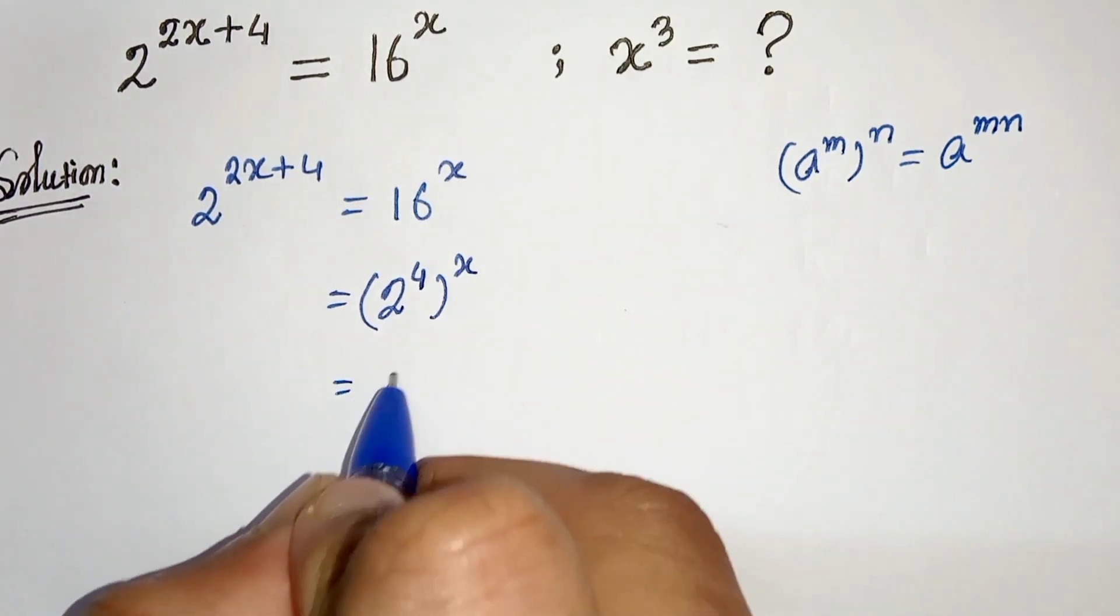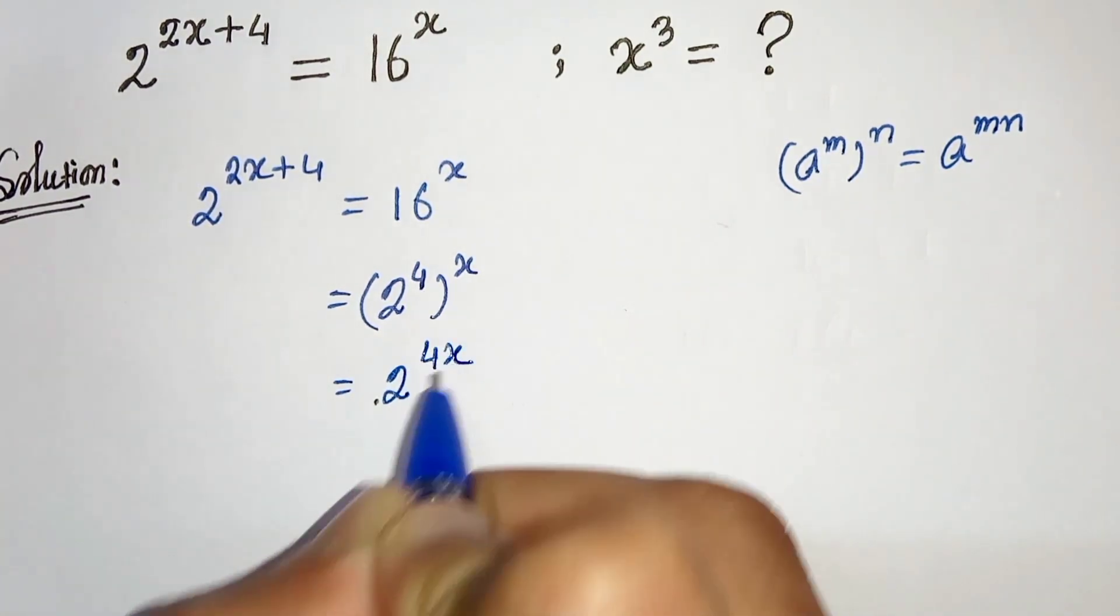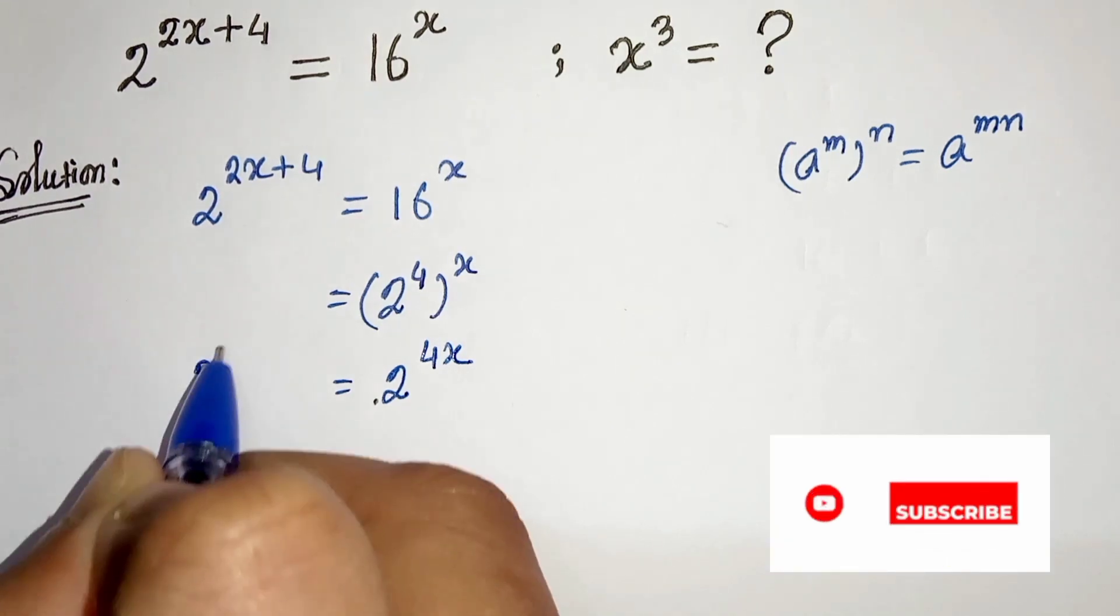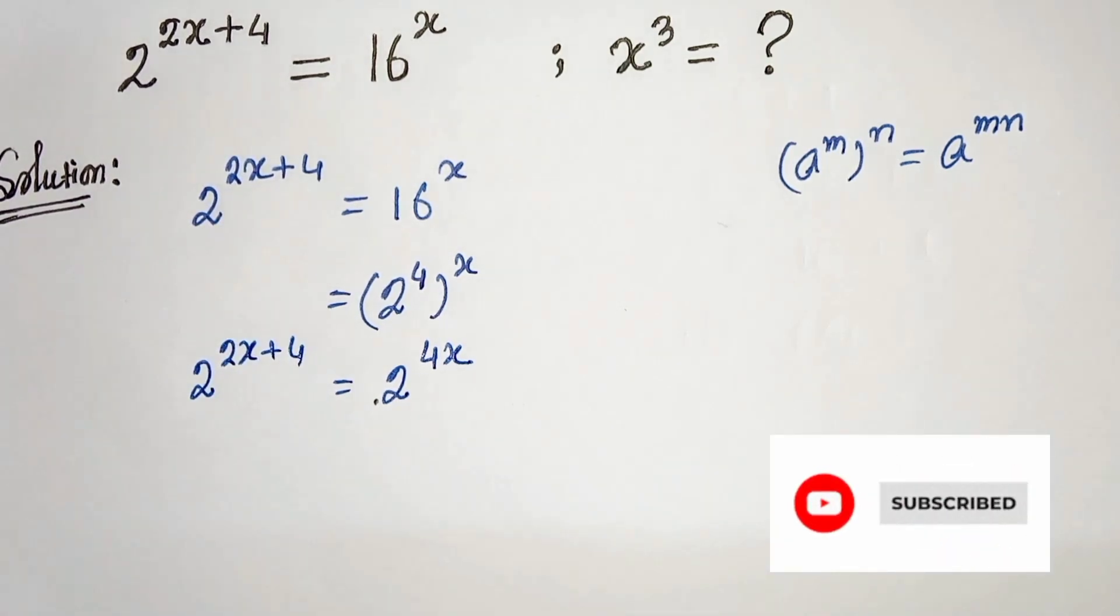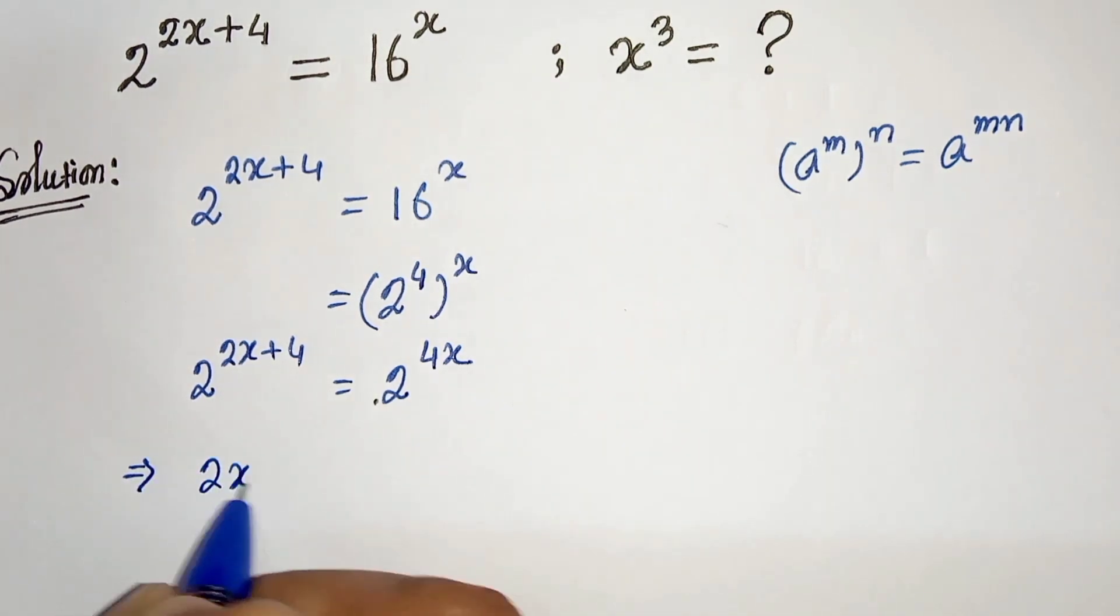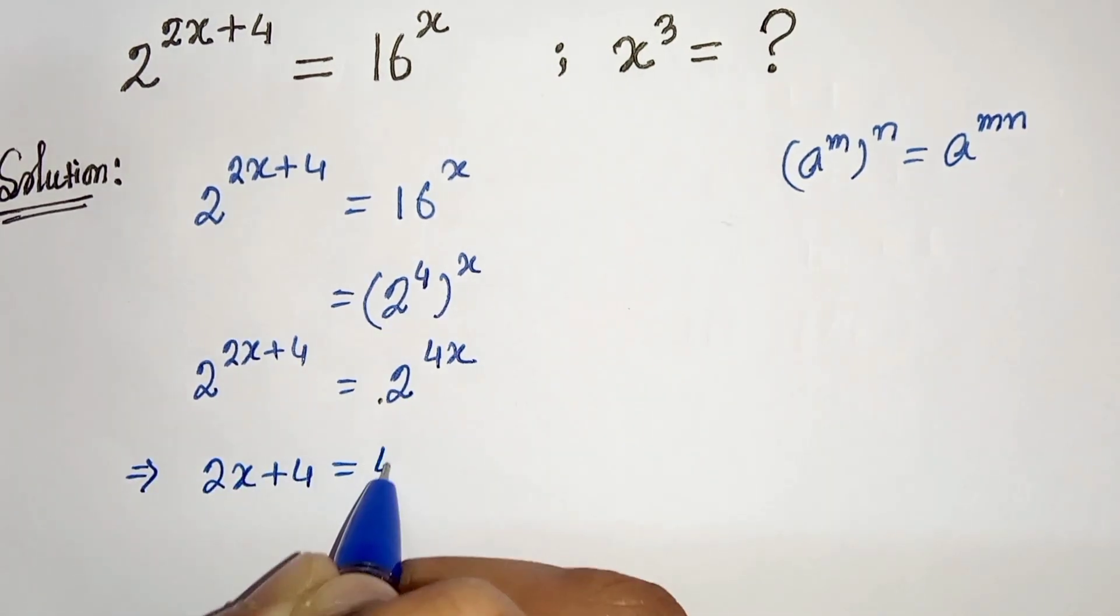So in the right hand side we can write 2 to the power 4x and in the left hand side we have 2 to the power 2x plus 4. Now if we compare both sides then we can write 2x plus 4 is equals to 4x.